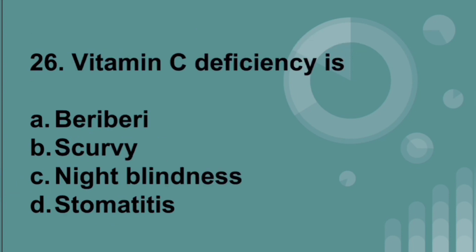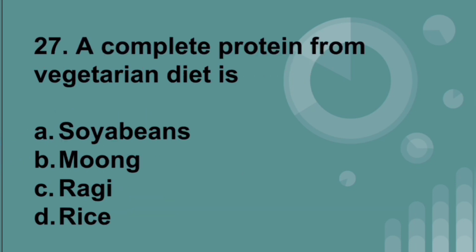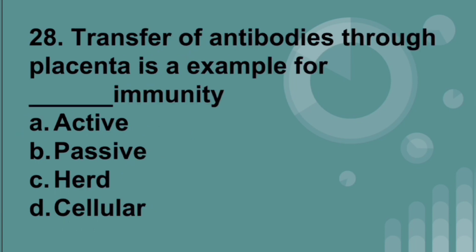Vitamin C deficiency causes scurvy. A complete protein from a vegetarian diet is soya bean. Transfer of antibodies through the placenta is an example of passive immunity — the mother gives antibodies to the baby through the placenta.